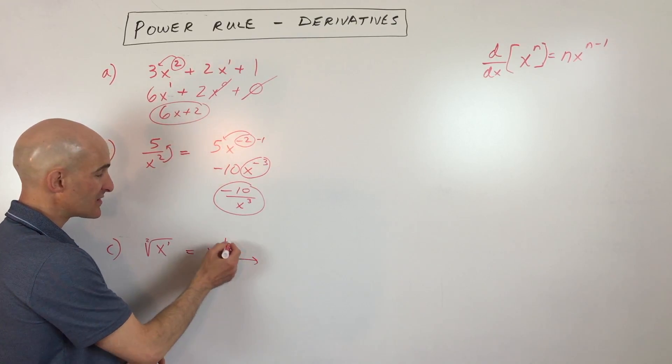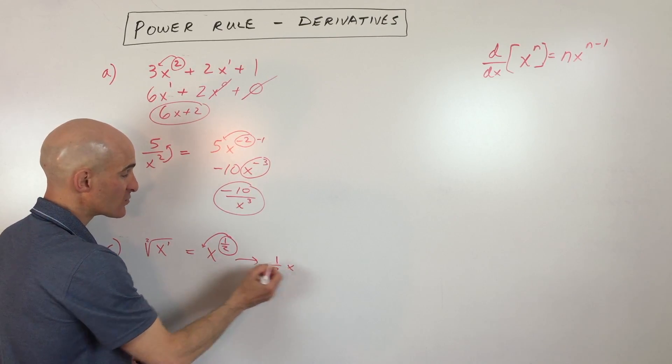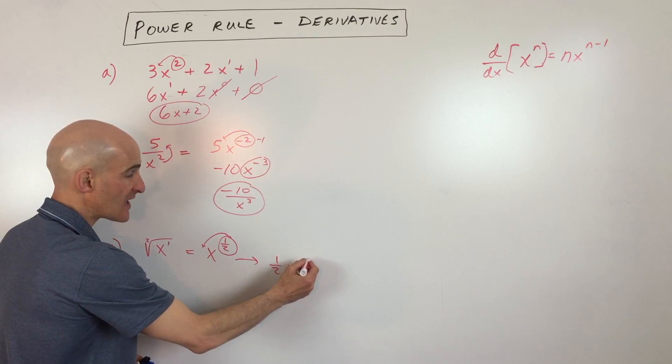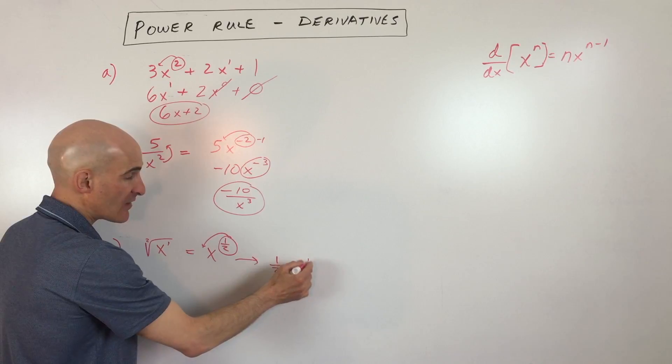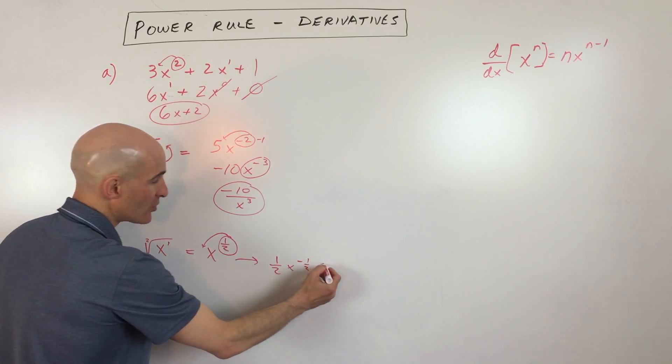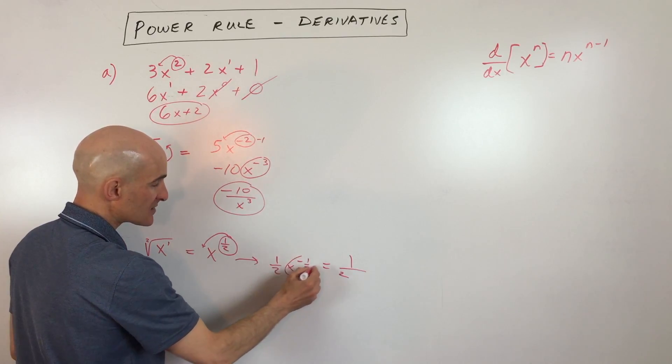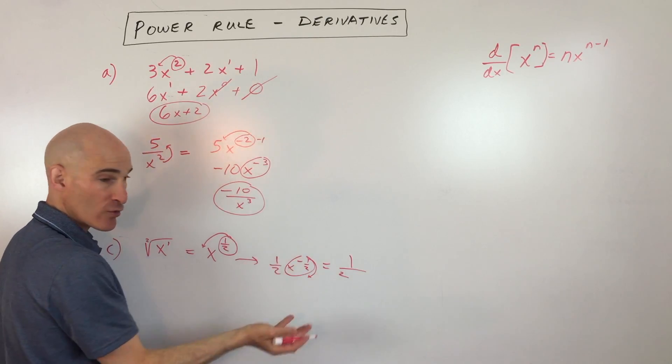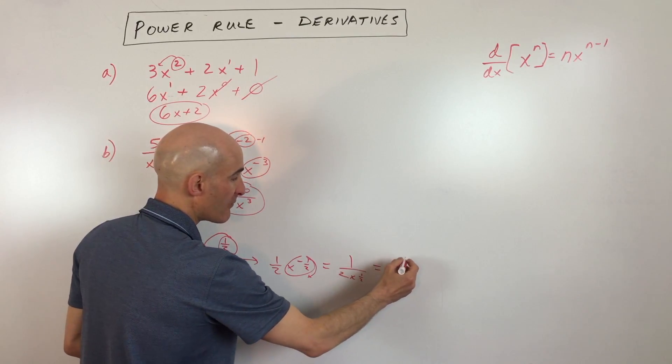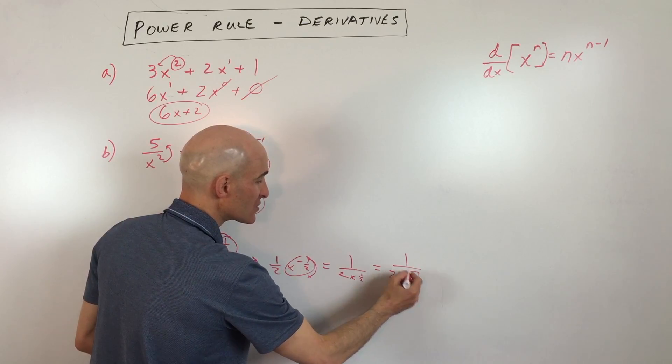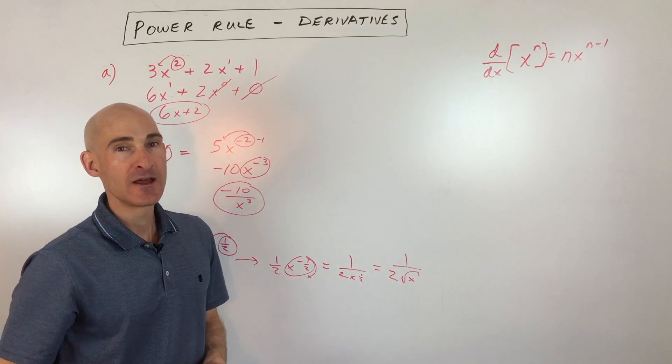So what we're going to do here is we're going to take the 1 half, we're going to bring it down in front of the x, and then we're going to subtract 1. So 1 half minus 1 is actually negative 1 half. Now again, just like the last problem, you have that negative exponent. You can take the reciprocal, so this is going to be 1 divided by 2. See the 2 is in the denominator. We're going to bring this also down to the denominator. We're just taking the reciprocal. That's going to be x to the 1 half power. But remember, the 1 half power is actually the square root. So this is 1 divided by 2 times square root of x.